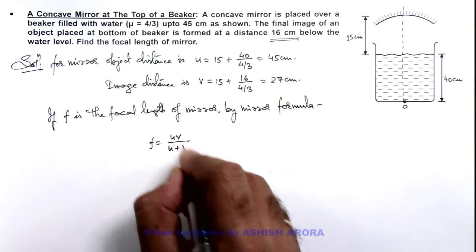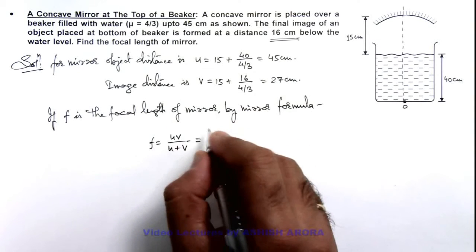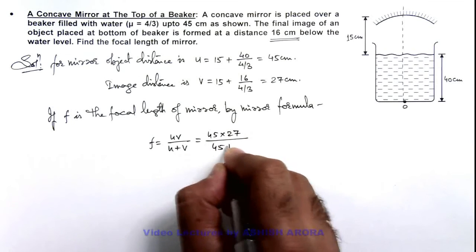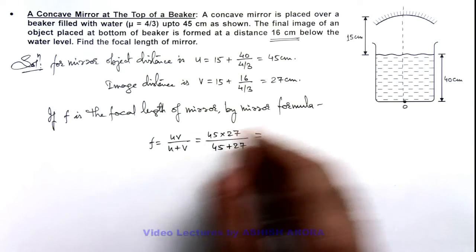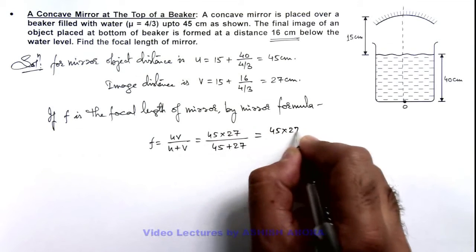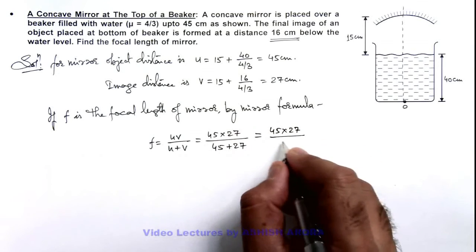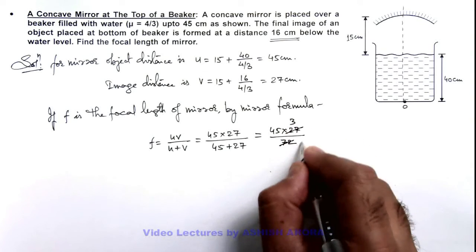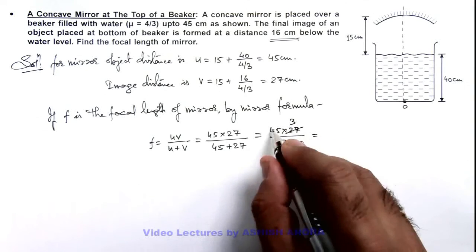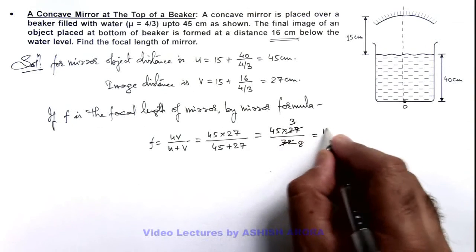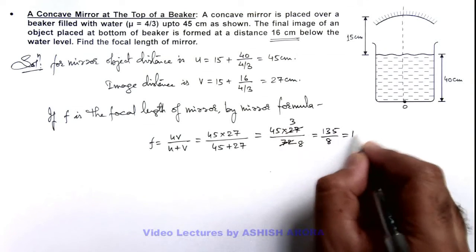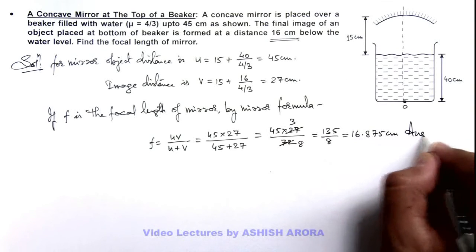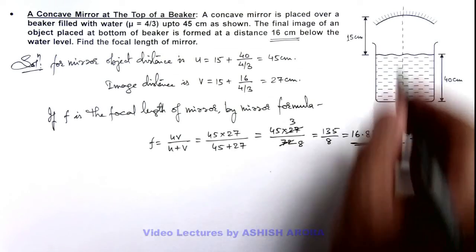On substituting the values it is 45 multiplied by 27 divided by 45 plus 27, which is 45 into 27 divided by this is 72. On further we can cancel it as 3 by 8, so the result will be 45 into 3, 135 divided by 8, that is 16.875 centimeter. That is the answer for this problem. This is the focal length of this concave mirror.